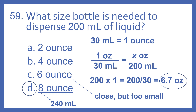So the 6 oz bottle is close, but that's too small. So we'll do the 8 oz bottle. 8 times 30 is 240 milliliters. So 200 milliliters would fit in a 240 milliliter bottle.